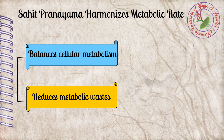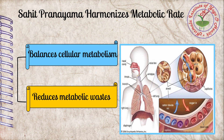Sahita pranayama harmonizes metabolic rate. It is a controlled breathing practice with a specific breathing ratio of 1:4:2 for inhalation, retention, and exhalation of breath respectively. This means breath holding will be four times and breath out will be two times longer than breath in.